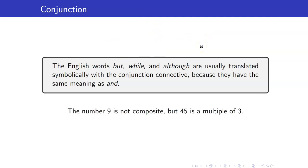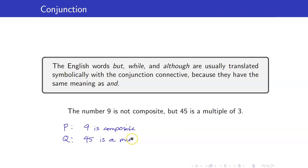For example: 'The number 9 is not composite but 45 is a multiple of 3.' If I make P be the statement '9 is composite' and Q is the statement '45 is a multiple of 3,' then this statement becomes not P — because 9 is not composite — and Q — 45 is a multiple of 3.